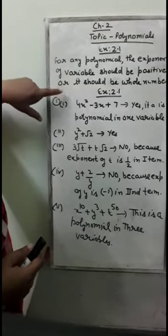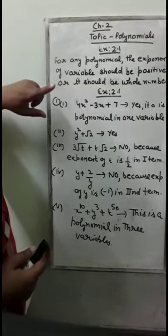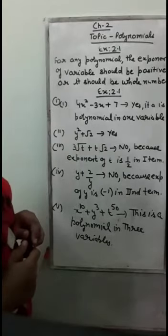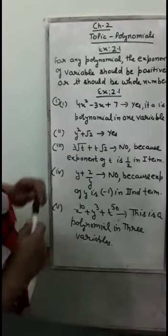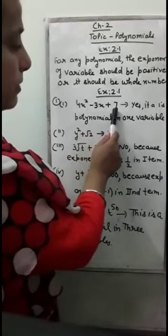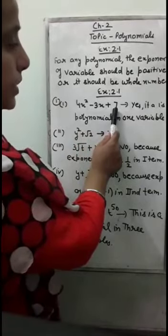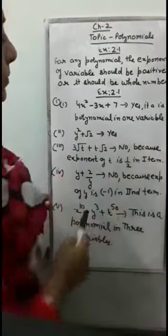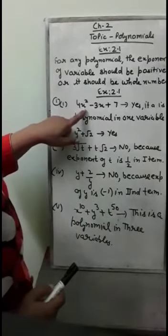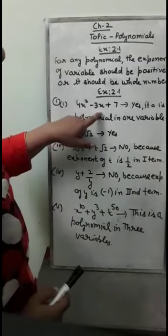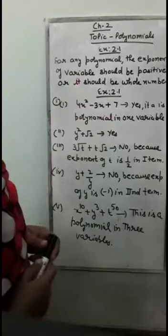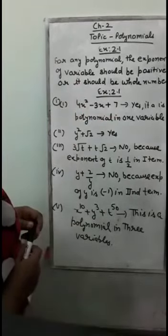In Exercise 2.1, somebody is asking you whether the given statements are polynomials or not. In the first part, the expression is 4x squared minus 3x plus 7. Yes, it will be a polynomial in one variable because the power of x is 2, then 1, and the constant is 7. So there is no problem — the answer is yes.